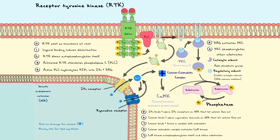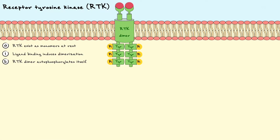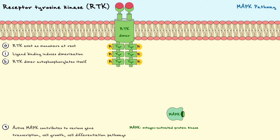It would be more enlightening to cover a pathway that is more of a hallmark of the receptor tyrosine kinase. This pathway, famously associated with RTKs, is the MAPK pathway. To understand the logic of this pathway, let me first describe what MAPK does, and then we'll see how the RTKs relate to it. MAPK stands for Mitogen Activated Protein Kinase. As its name says, MAPK is a kinase, and its main phosphorylation targets are involved in gene transcription, cell growth, and cell differentiation, to name a few.